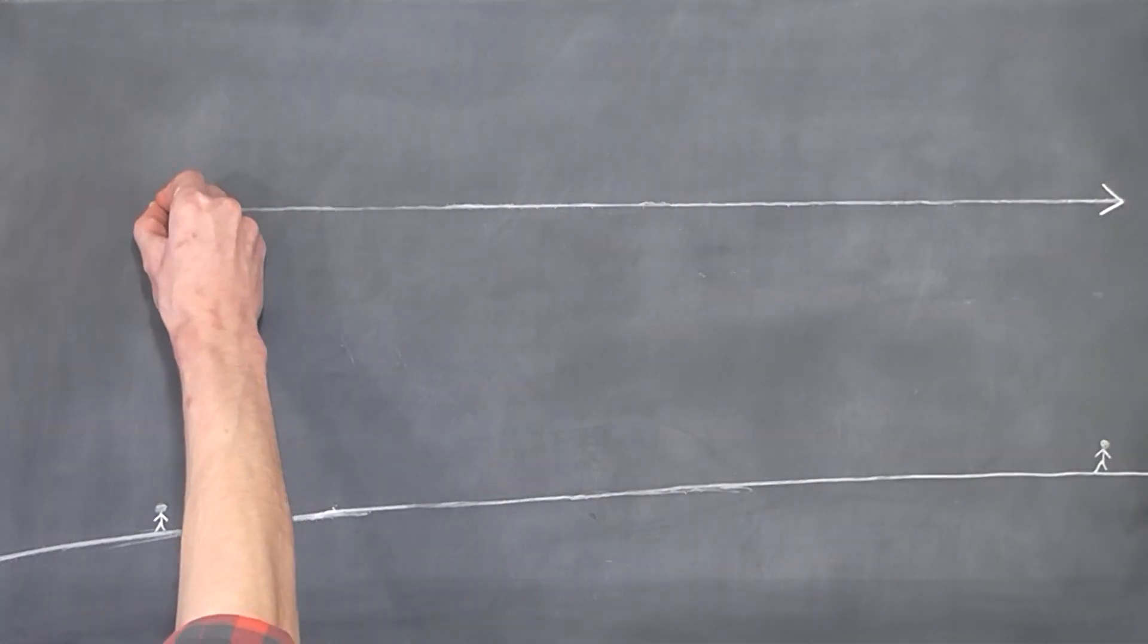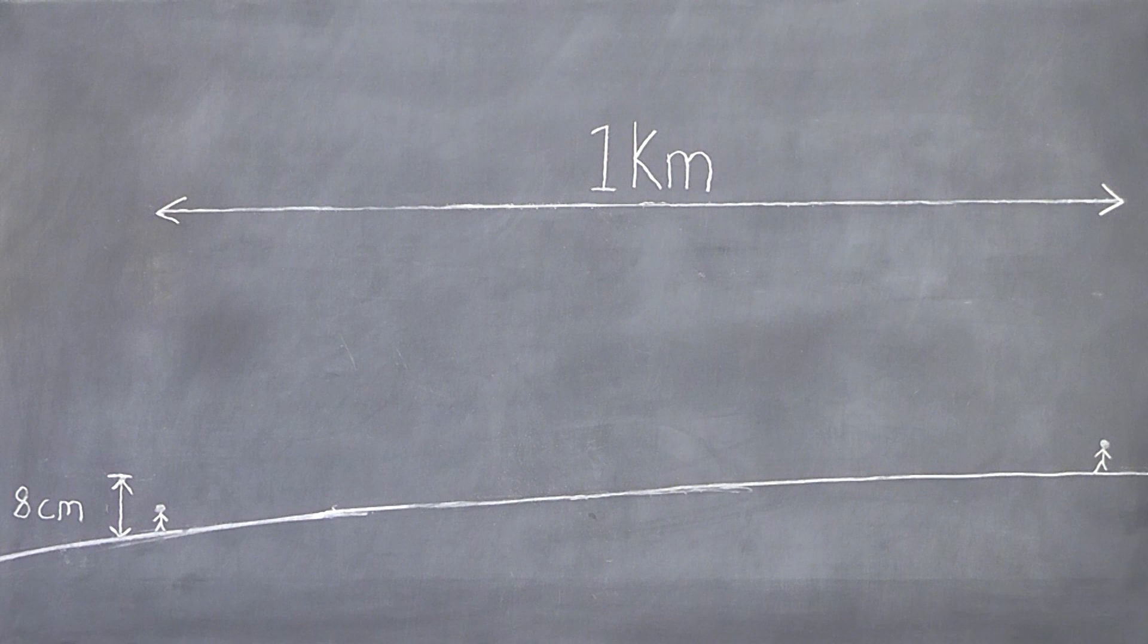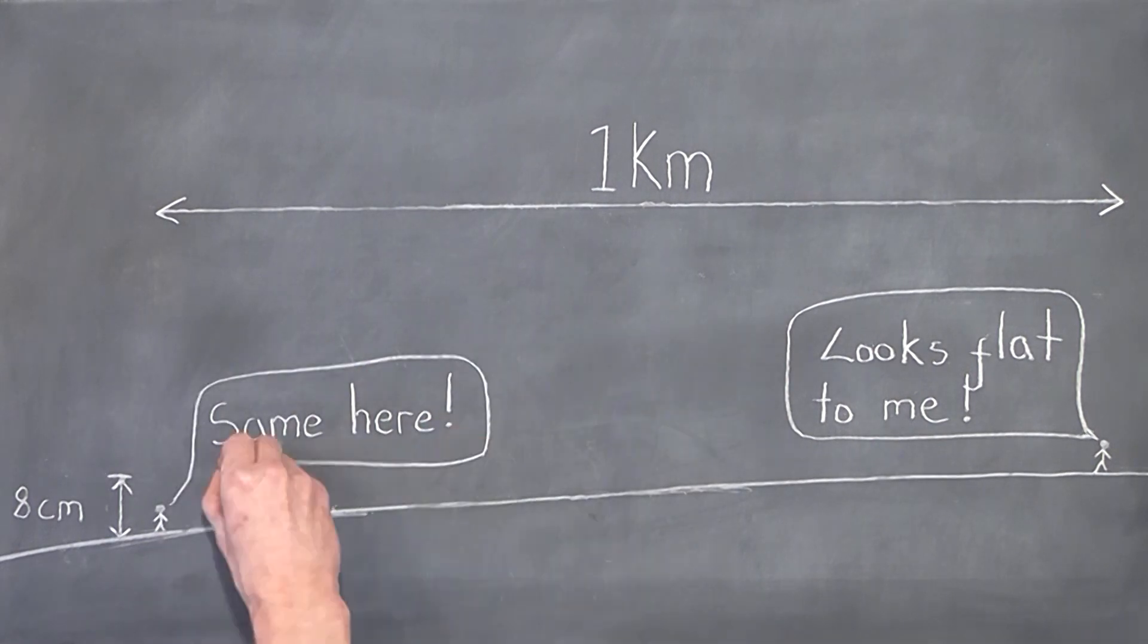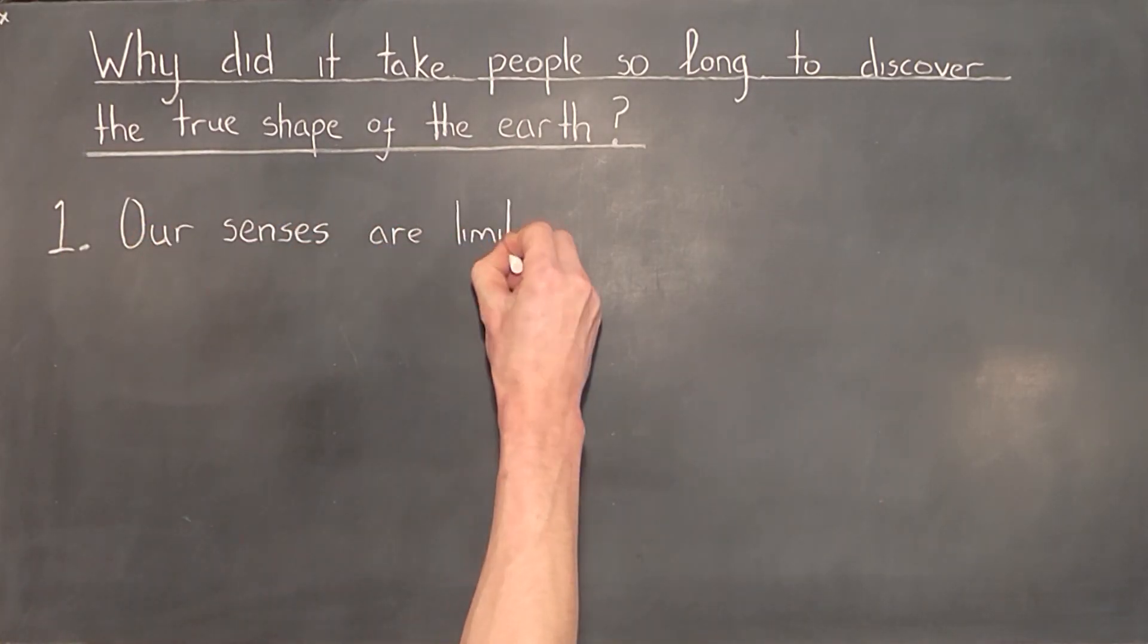If you and a friend were to stand one kilometer apart from each other, on average, the curvature of the earth is 8 centimeters. Yes, 8 centimeters. Our senses are simply not accurate enough to detect this minute change. So yeah, our senses are limited and mislead our intuition.